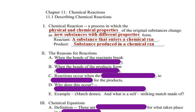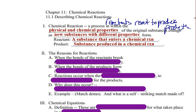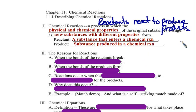I want you to think of it like this: reactants react to produce products. Reactants are the things that come together, and the products are the things that are produced.